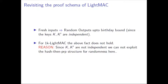The proof of the original LightMAC used the hash-then-PRP structure and guaranteed that fresh inputs always give random outputs since the keys are independent. But for single-key LightMAC — that is, 1K LightMAC — we cannot exploit the above fact because these keys are not independent; they are the same key. So we have to try a different approach to get the result.